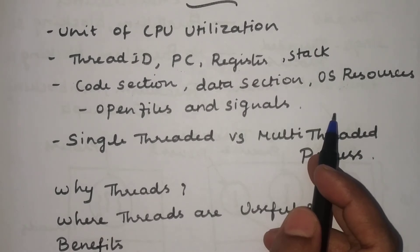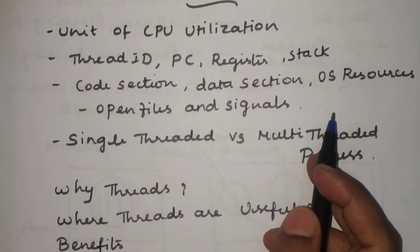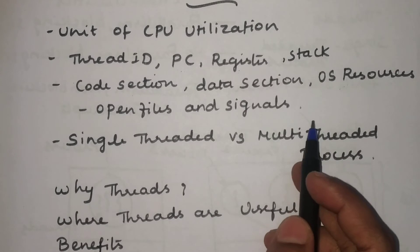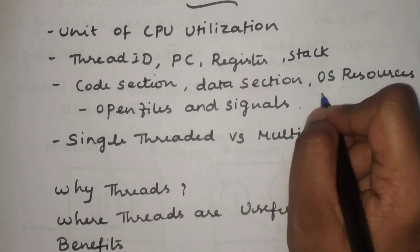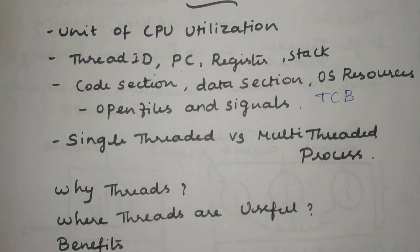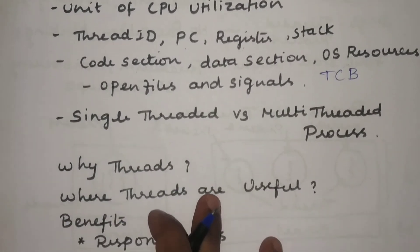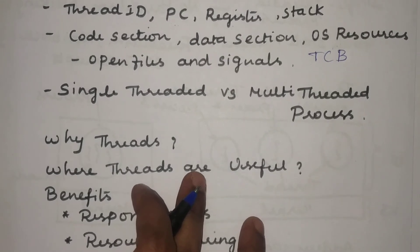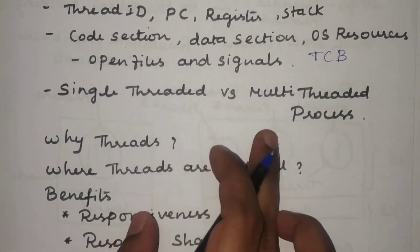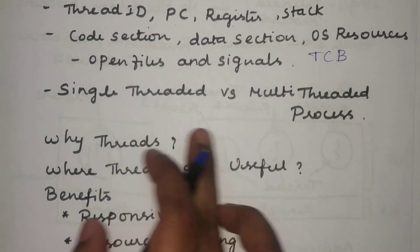Similar to the process — where all information is stored in a table called the Process Control Block, or process table — similarly for threads, we have a block called the Thread Control Block. The Thread Control Block is used to hold information about the currently executing threads. As mentioned, in a traditional operating system a process consisted of only one thread, but nowadays we are actually working with multi-threaded processes. We will discuss and compare these two environments.